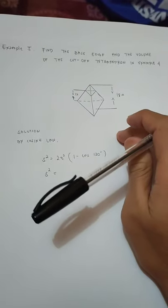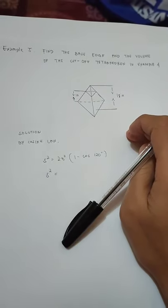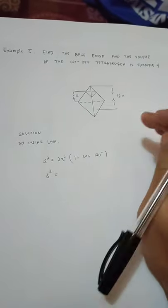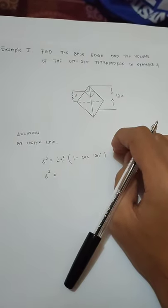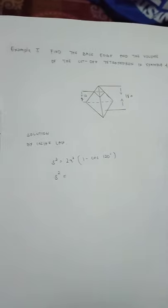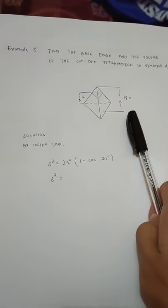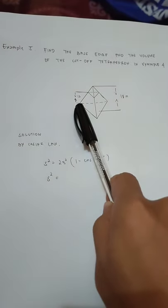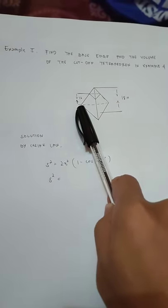In Example 5, find the base edge and the volume of the cutoff tetrahedron in Example 4. In Example 4, in our lecture, it was illustrated where 18 is the altitude and 12 is the length or height of a plane parallel to the base.